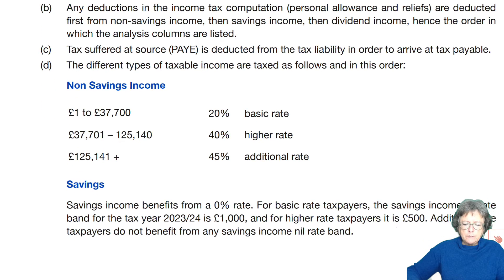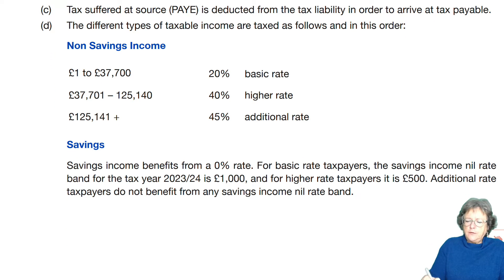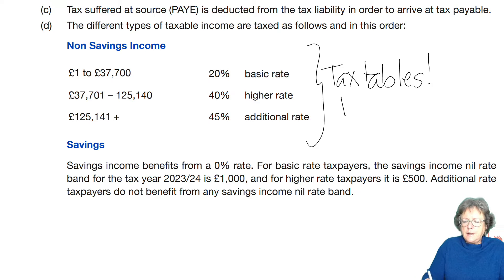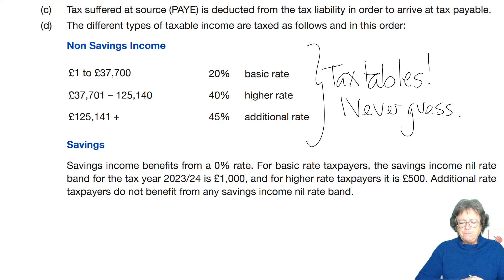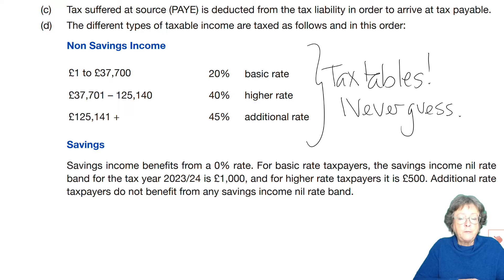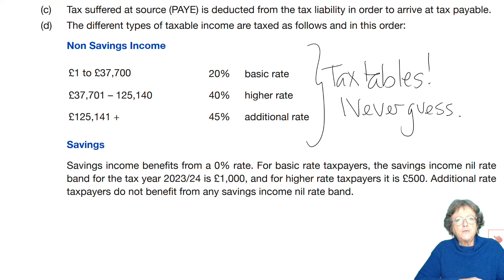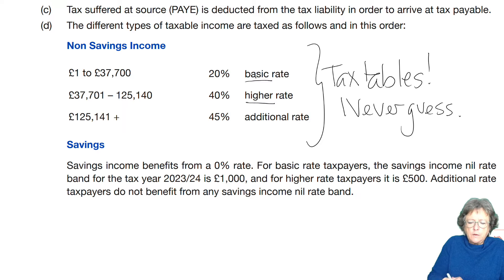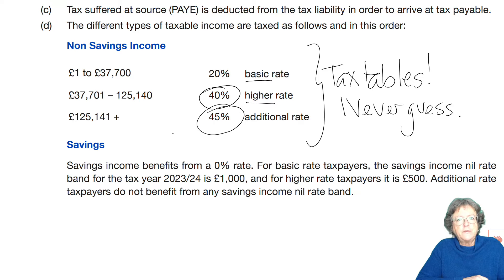The rates of tax — I've taken these from the tax tables. Never guess. Always check. The first £37,700 of any taxable income is taxed at basic rate: 20%. Anything over that up to £125,140 is taxed at 40% — that's the higher rate. Anything over that amount is additional rate tax, taxed at 45%.